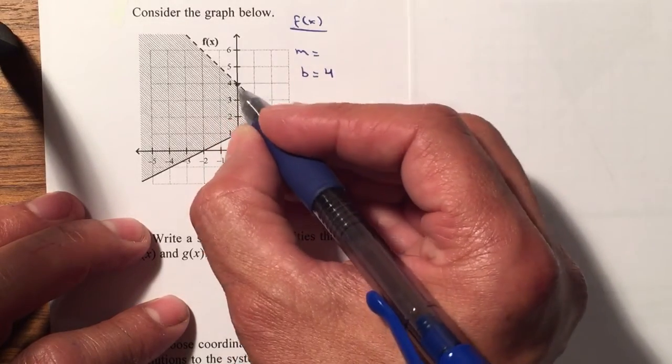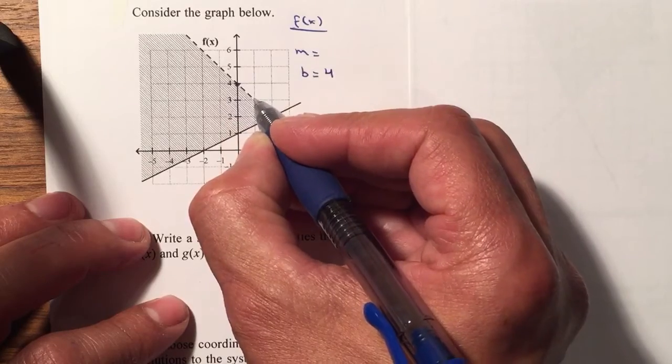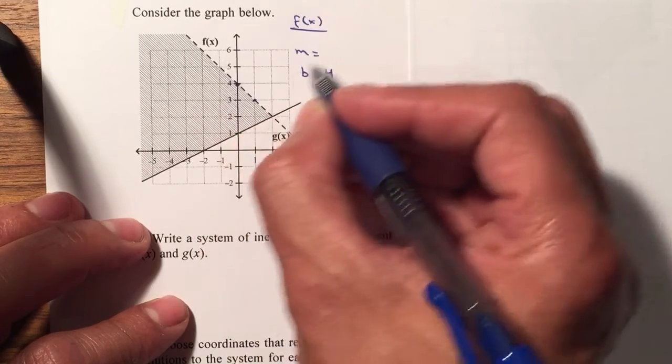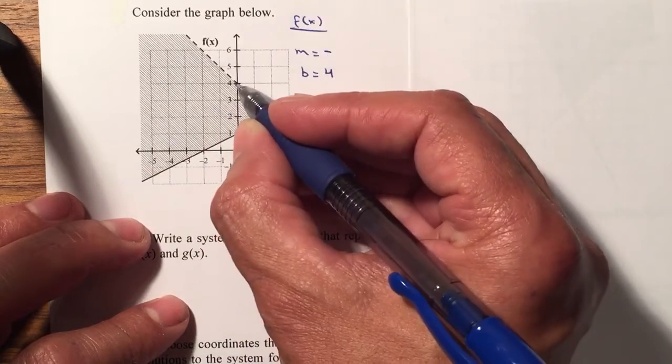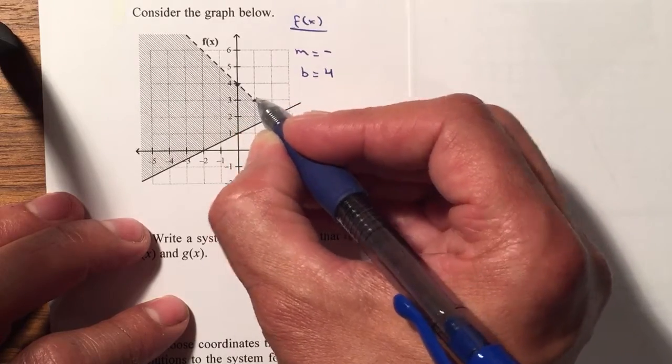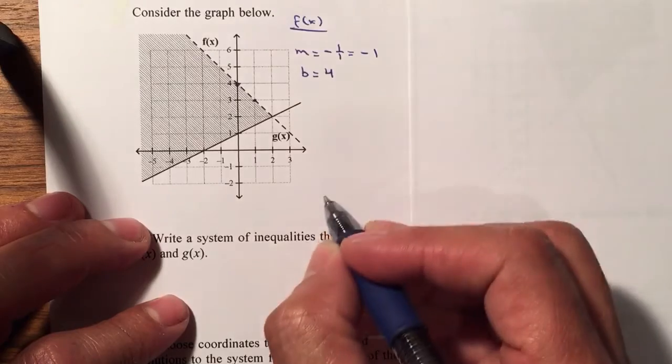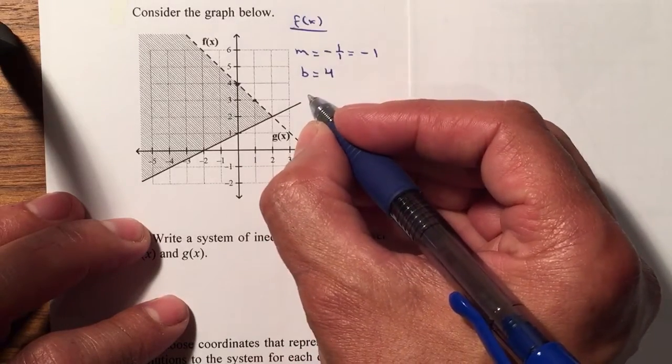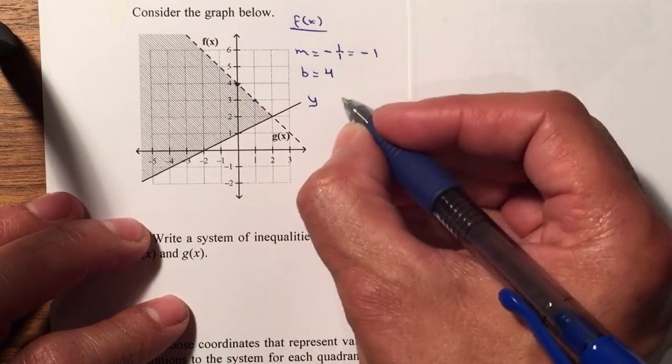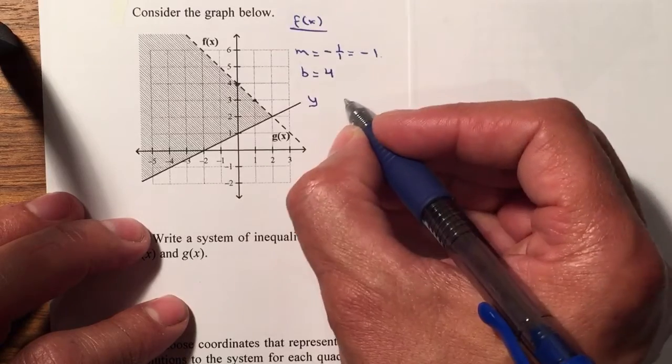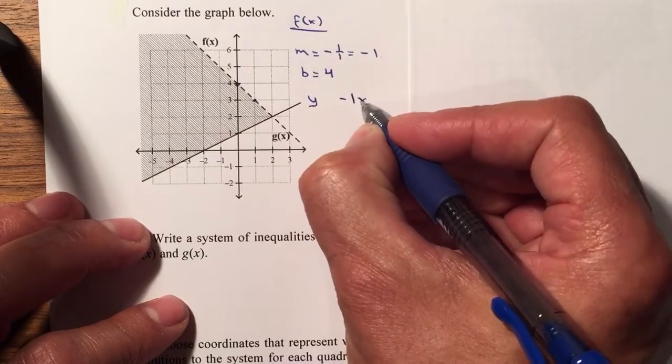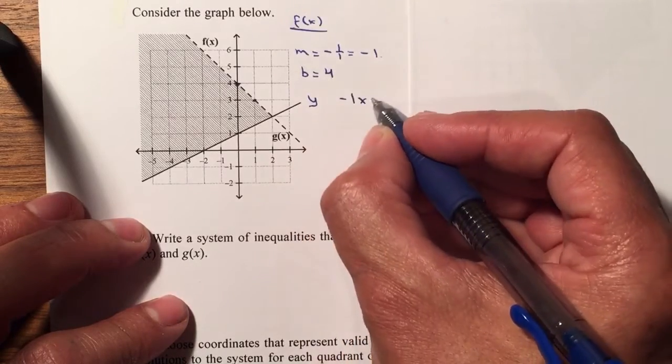And my slope, I'm going to select another point which is right here. I know it's going to be negative since it's going down. It's down one and to the right one, 1 over 1 or just negative 1. So therefore I'm gonna use y first. My slope is negative 1, so it'll be negative 1x plus b, which is plus 4.